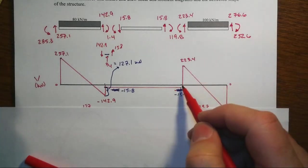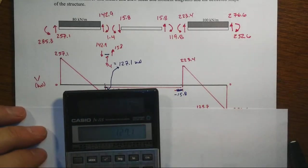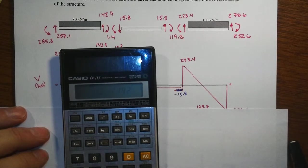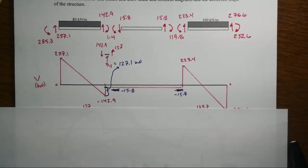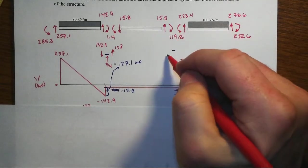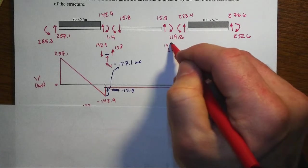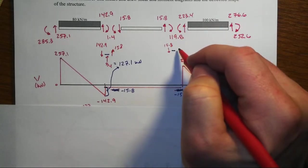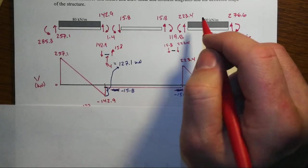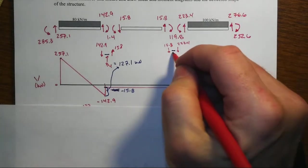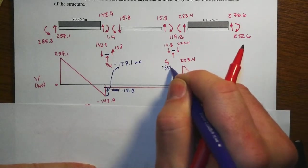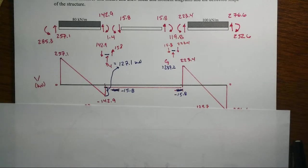Same kind of thing is true over here. This difference between the 223.4 and 15.8 is going to be our reaction for CY. Because of the directions that we've got, we've got the 15.8 coming down here, and we've got the 223.4 coming down there. That leaves us a net of 239.2 for the vertical reaction at C.